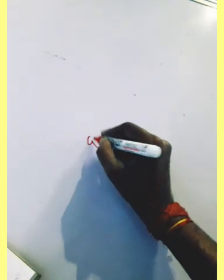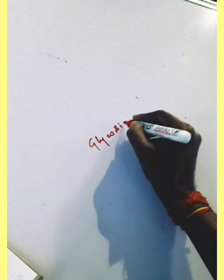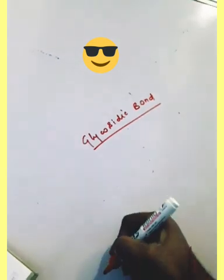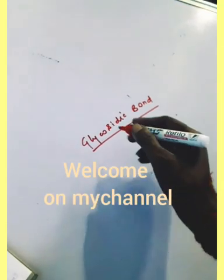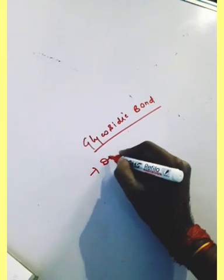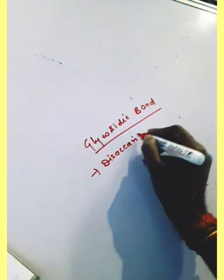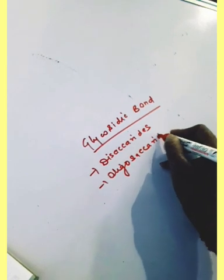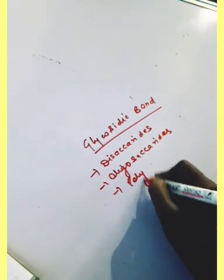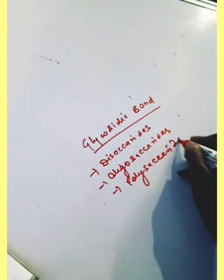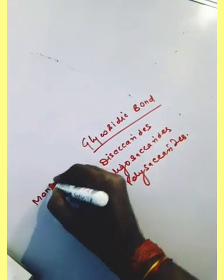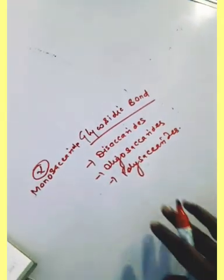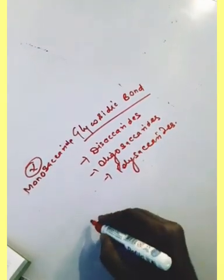Hello friends, today we are going to discuss the glycosidic bond. The glycosidic bond is found in disaccharides, oligosaccharides, and polysaccharides, but it is not present in monosaccharides. So what is the glycosidic bond? We will take an example here.